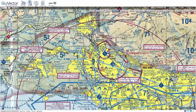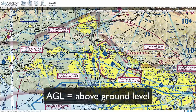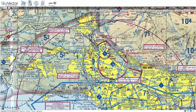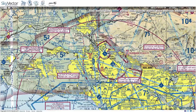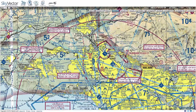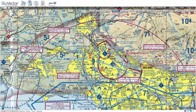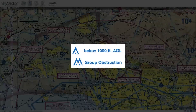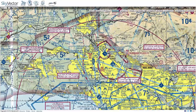For drone operators it's a little bit more convenient to have everything in AGL, and specifically things like obstacles. There are several different types of obstacles listed on the sectional chart.